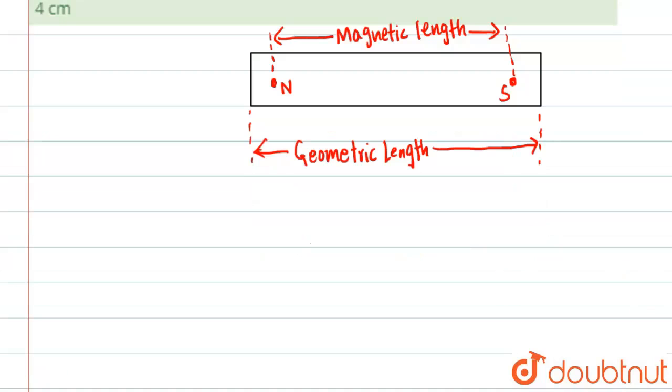And also the geometric length. Geometric length, basically the magnetic length. We have a formula that is magnetic length is equal to magnetic length is equal to 5 by 6 of geometric length.